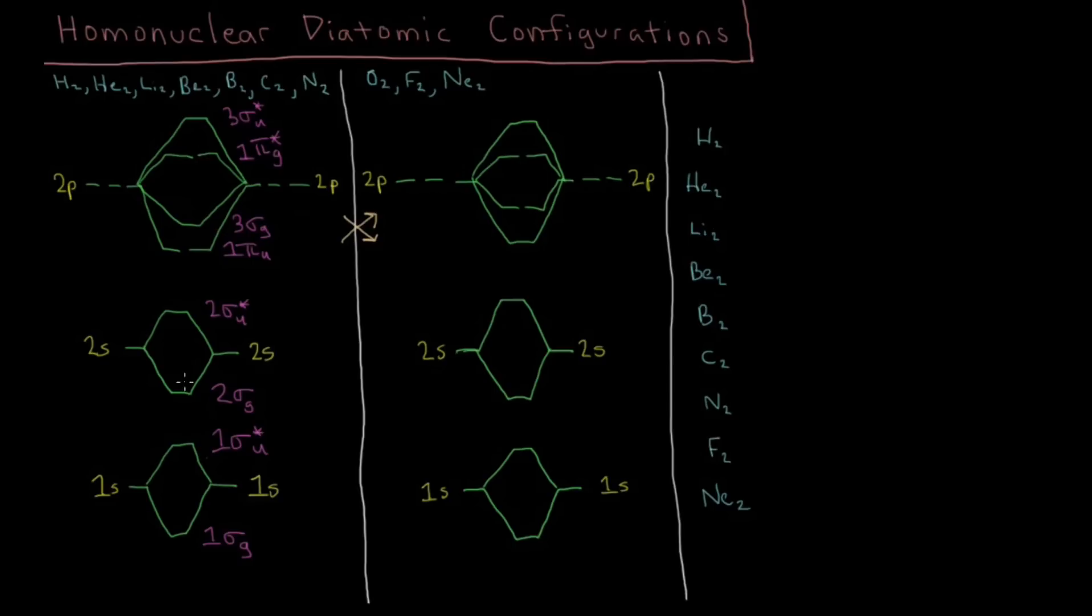And this diagram that I've got here works for the H2 molecule all the way up until the N2, all the way up until nitrogen. Then what happens beyond that? When you go to oxygen, there's a switching. The 3σg actually becomes more stable than the 1πu. So you see the 1πu is actually higher in energy now than the 3σg. And so what we actually got here is that those two orbitals change there.